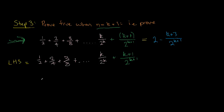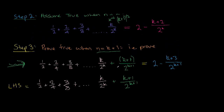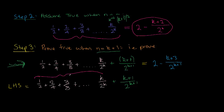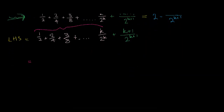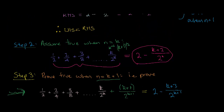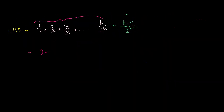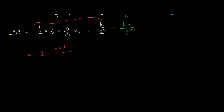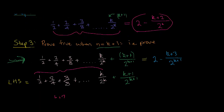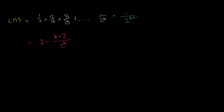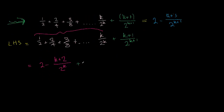Now we make the assumption substitution. From our assumption, this pink portion — everything up to the kth term — is the same as 2 minus (k+2) all over 2 to the k. So we substitute that in. We now have 2 minus (k+2) all over 2^k, plus (k+1) all over 2^(k+1).